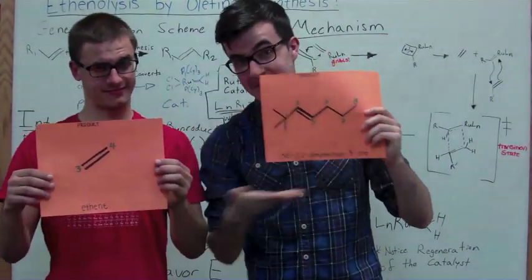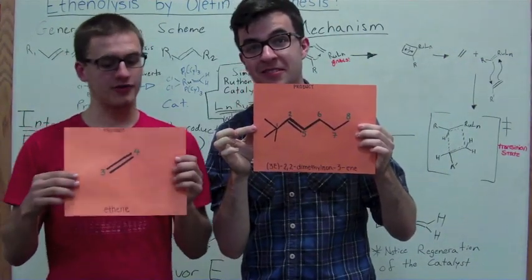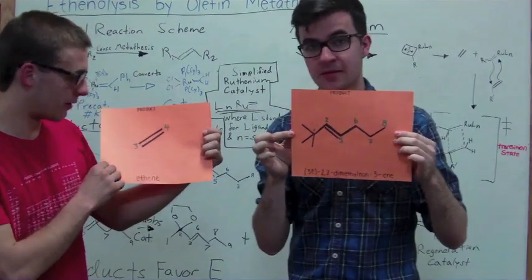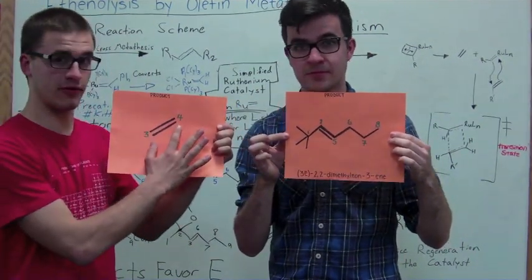Notice how the product formed here is in the E configuration. Also notice that the terminal alkenes, the terminal carbons on the reactant alkenes were three and four, and they're now three and four in the product ethene.